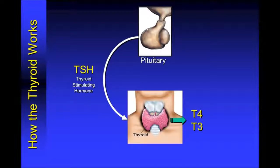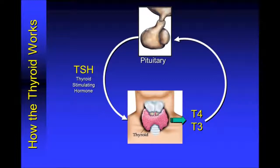There are two main forms of thyroid hormone in your blood: one is called T4, the other is called T3. As the thyroid hormone floats around in the blood, it passes back through the pituitary, which determines whether the amount of thyroid hormone in the blood is correct for you or not. In response, the pituitary will either put out more or less TSH in an attempt to regulate the amount of thyroid hormone being made.